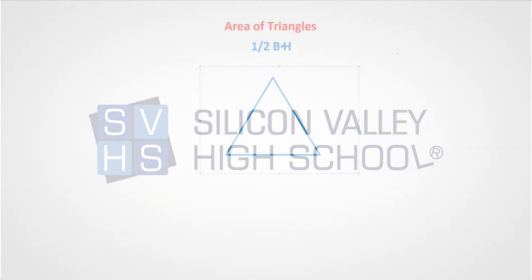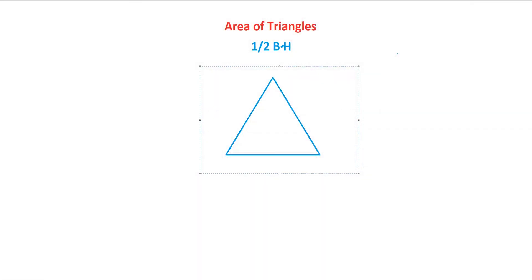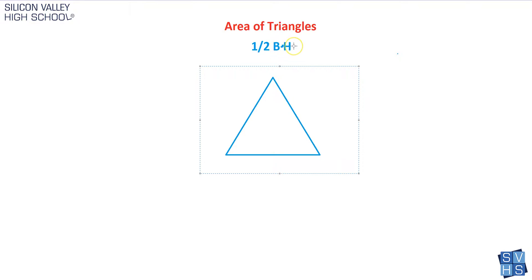The area of triangles is actually super easy. There's a formula and you can just blindly follow it. The area of any triangle is one half times the base times the height. The only part that might be mildly difficult would be in trying to identify what is the base and what is the height.